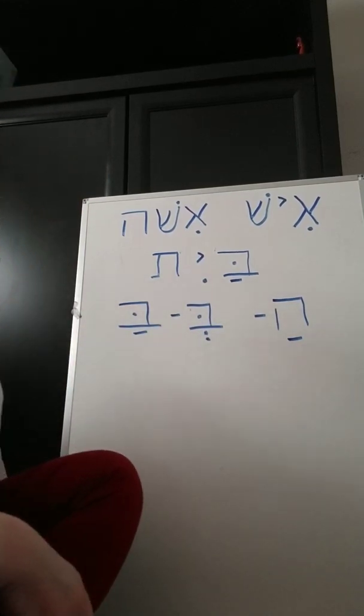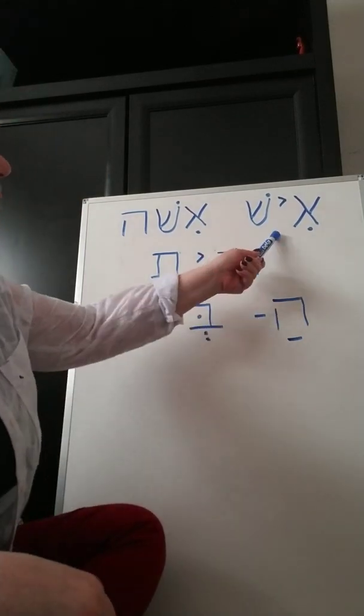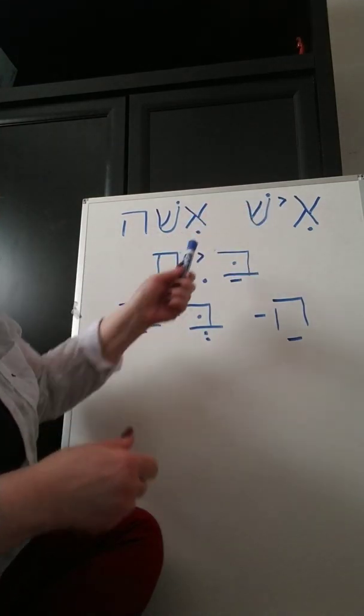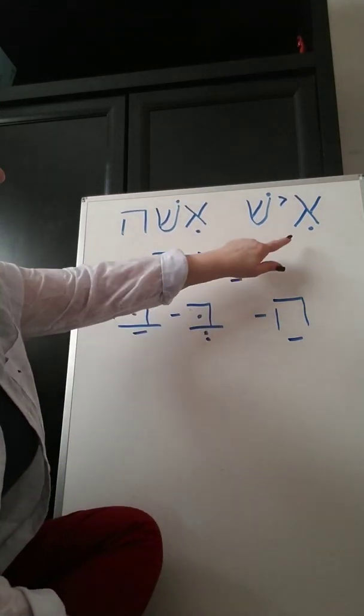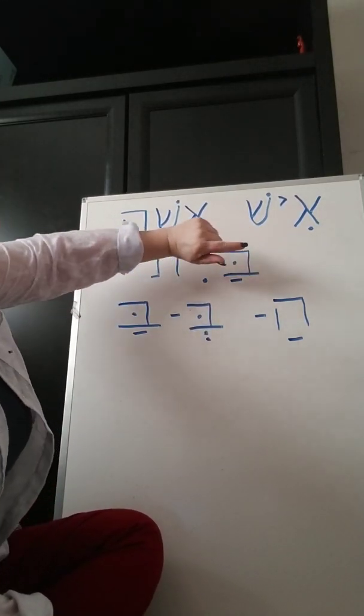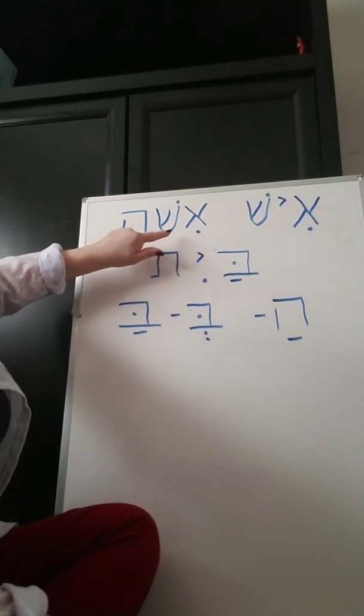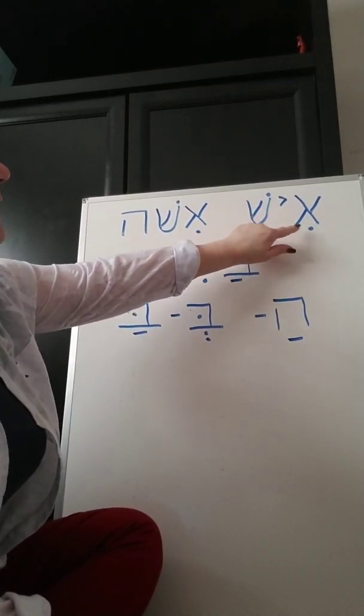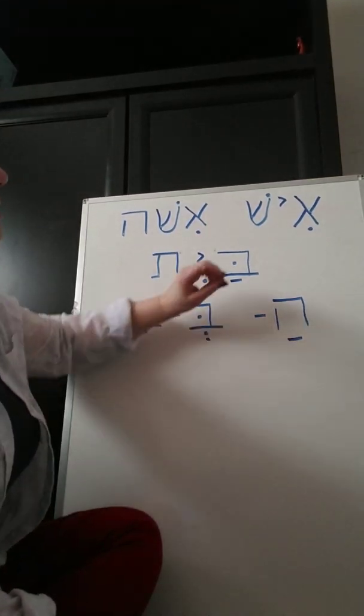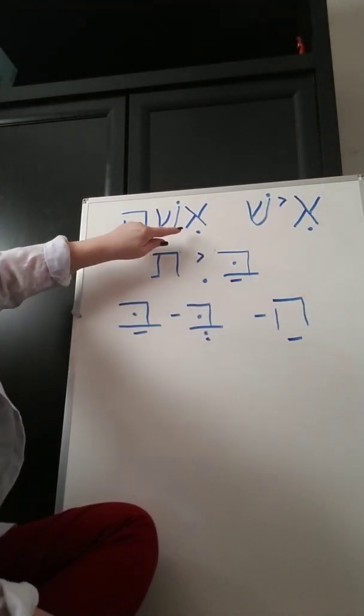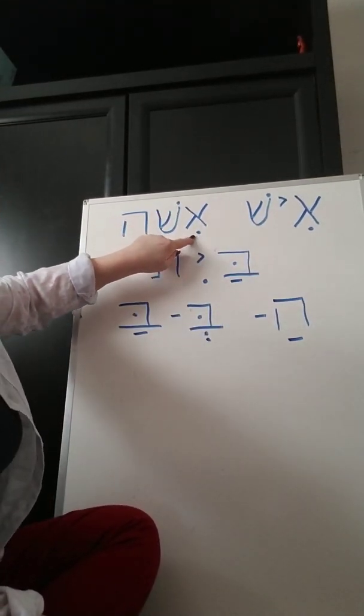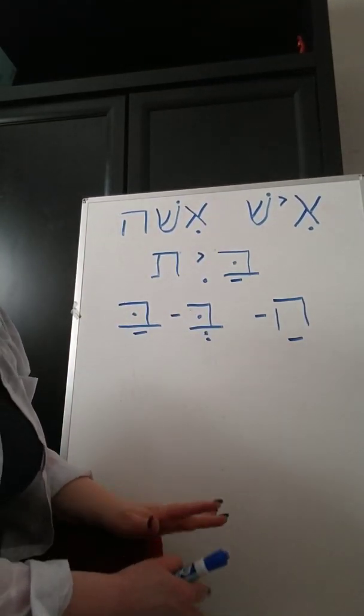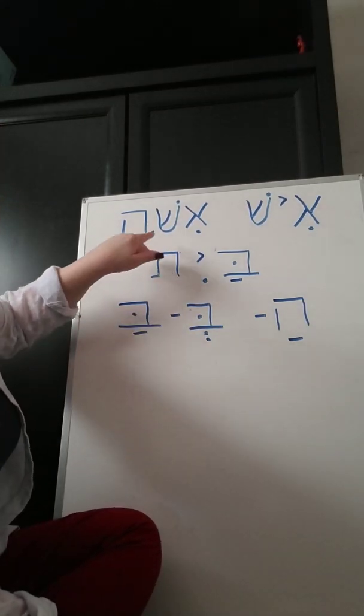Okay. So this is the word for man, ish - aleph, yod, shin. I was thinking I'd forgotten a letter, but I didn't. And then this is woman, ishah. Now you have the yod here. The hirik yod makes the long e sound, but even if you don't have the yod, but you have the hirik, then it's still going to make the e sound. So both of them are three letters. If that helps you remember it, just got to remember which one is different.